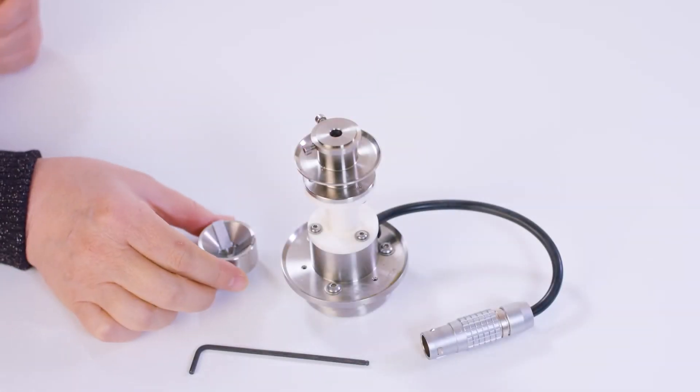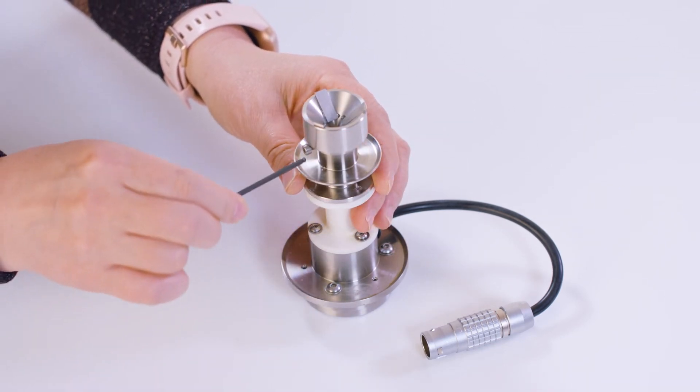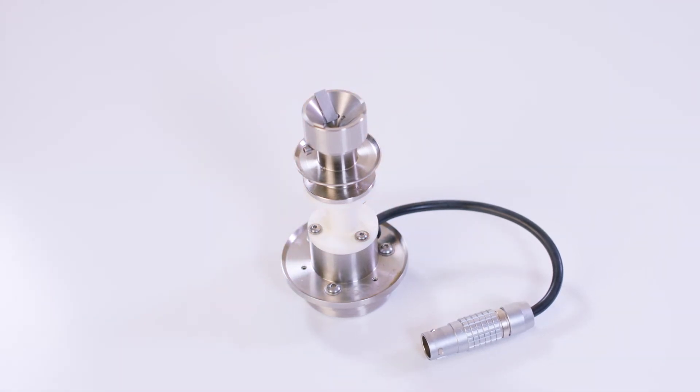If you're using the ETC oven as temperature control for your tribo-rheometry test, attach your three plates lower geometry to the ETC disposable bottom stage. Tighten the screws on the side, and then install this stage to the bottom of the rheometer.